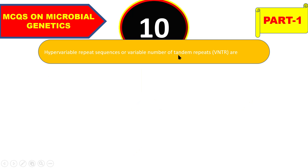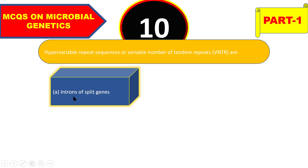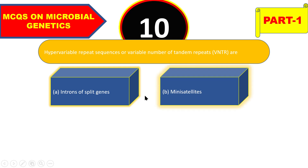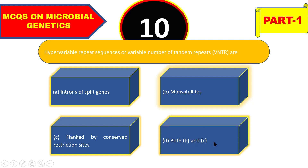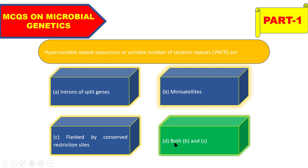Next question: hypervariable repeat sequences or variable numbers of tandem repeats (VNTR) — are these introns of split genes, mini-satellites, or flanked by conserved restriction sites, or both B and C? The right answer is both B and C — they are mini-satellites and flanked by conserved restriction sites.